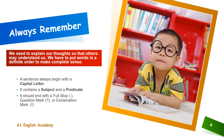Whenever we are communicating, we need to explain our thoughts so that others may understand us. We have to put words in a definite order to make complete sense. Besides this, there are some other attributes which a sentence has. A sentence always begins with a capital letter. It contains a subject and a predicate.